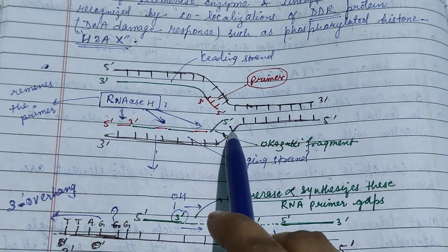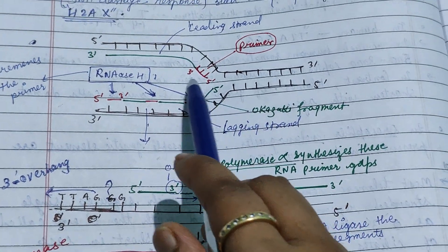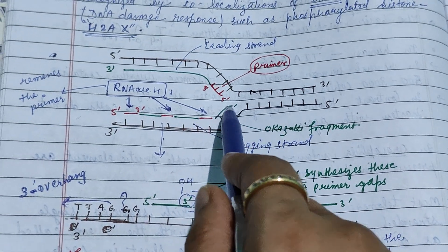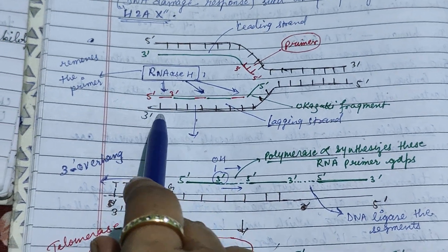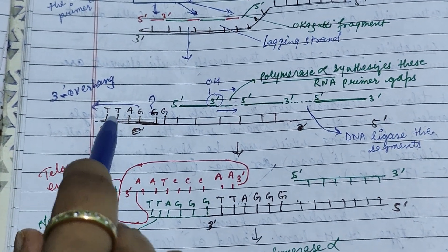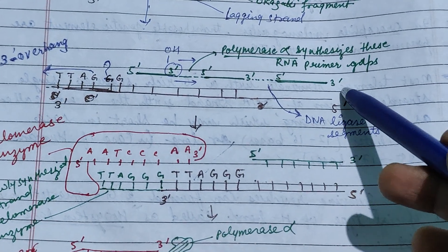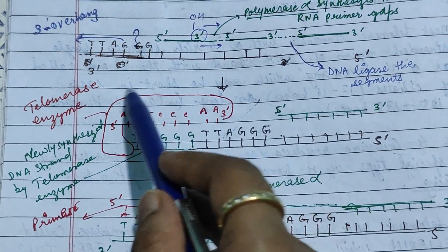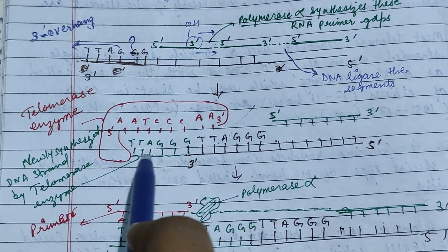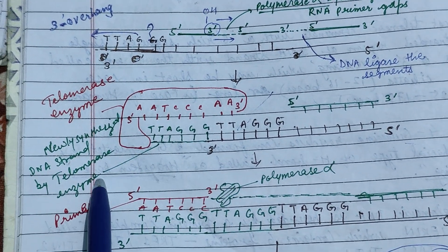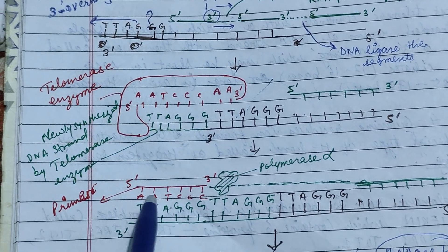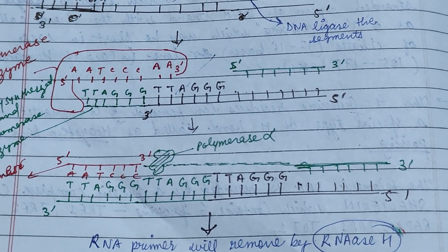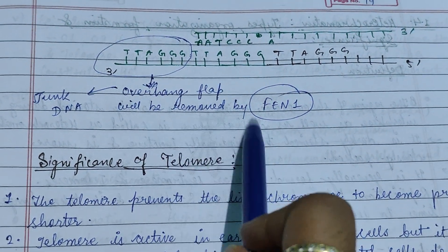RNase H is an enzyme that cuts the primary primer on the lagging and leading strands. Primers are removed by the RNase H enzyme, leaving the 3' overhang TTAGGG sequence. Polymerase alpha synthesizes the RNA primer, DNA ligase joins the segments, and then the telomerase enzyme acts on the telomeric region of the chromosome to synthesize a new DNA strand. Primers are added and this process continues, with RNA removed by RNase H.